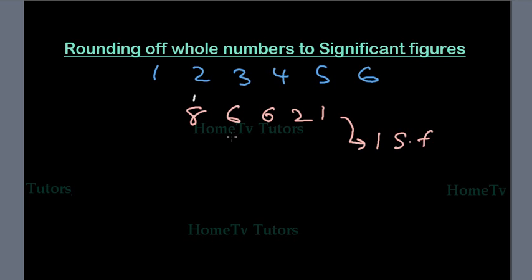Then the first of the group of numerals to be deleted is 6, which is more than 5. So it will increase the significant numeral by 1. So we have 90000 to 1 significant figure.